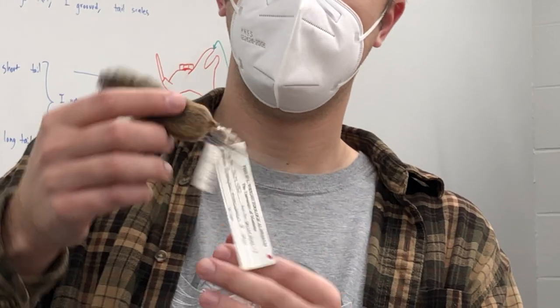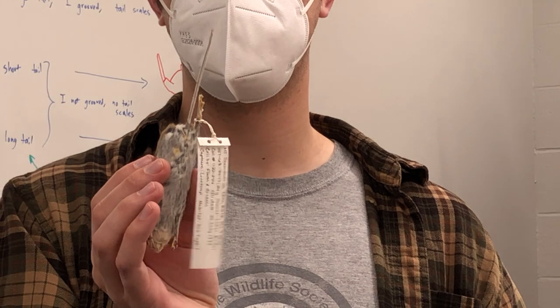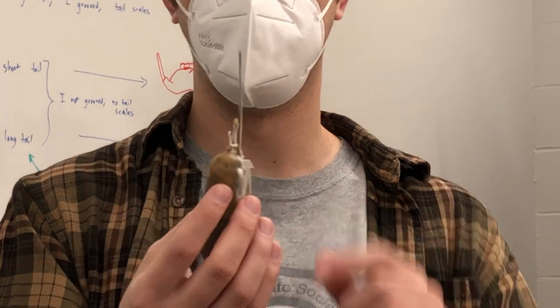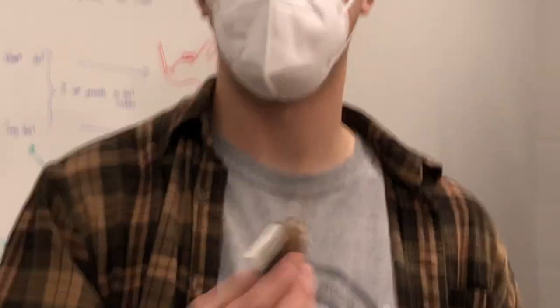And especially notable for Peromyscus is the tail is distinctively bicolored. Meaning, the countershading is not just the belly, but it has a tail that's dark on the top, light on the bottom. So long tail, dark with light, this is our deer mouse.